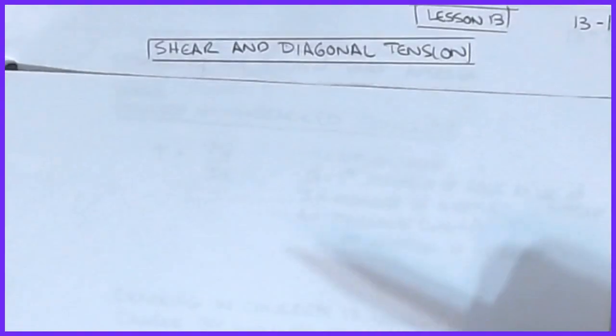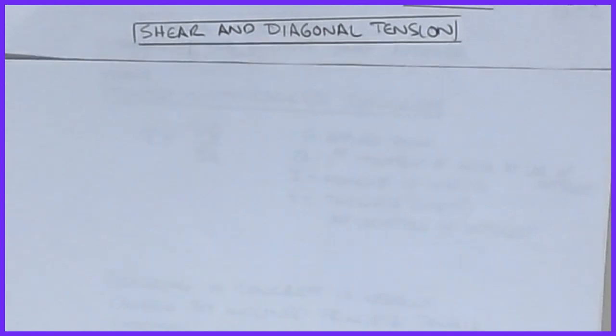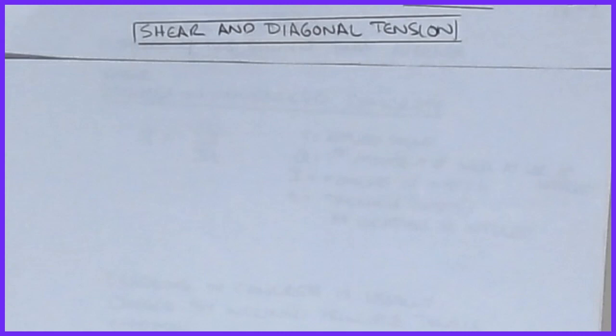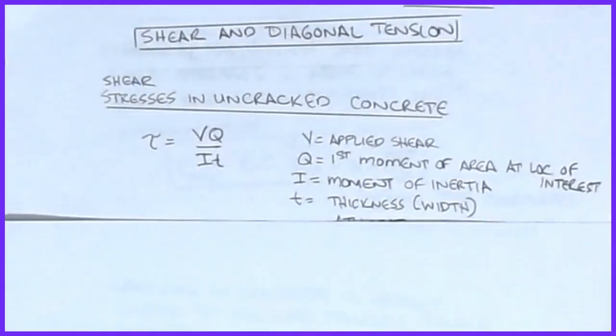Welcome back. In today's lesson we're going to change our attention from flexural moment analysis and design of cross sections to shear and the diagonal tension that is a related component of that. We're fortunate that the analysis methodology that ACI chooses to use follows a mechanics-based approach.